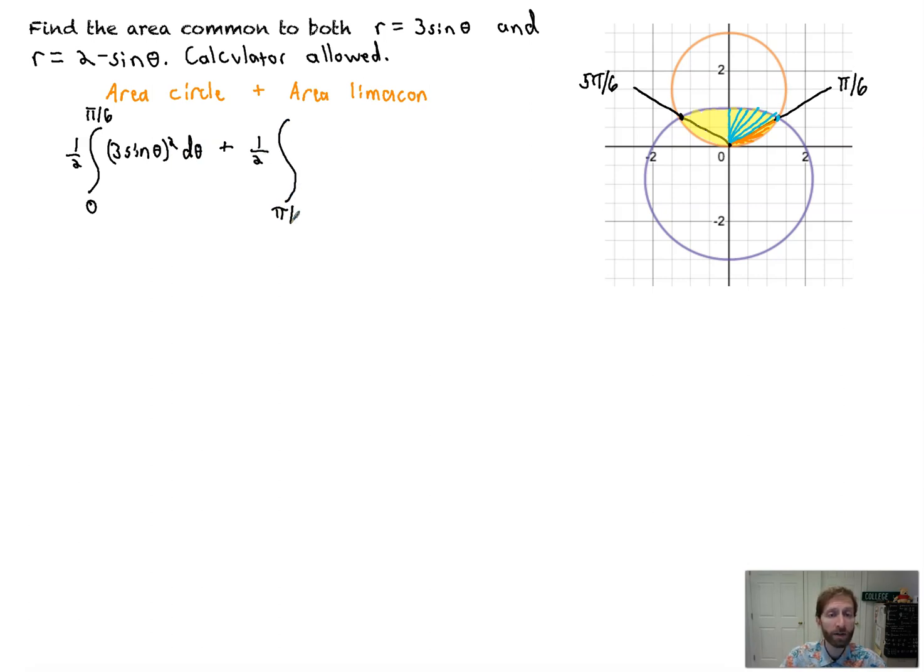Now we start at pi over 6 because that's where this slice begins. And then we sweep out area until we get to pi over 2. And that gives us half of what we want. So it's the bounds that are the hard part. And the curve that we're now integrating along is 2 minus sine theta squared. That's our new boundary there.